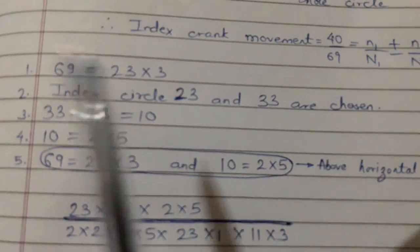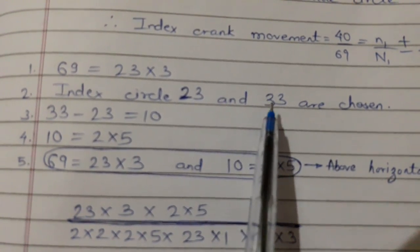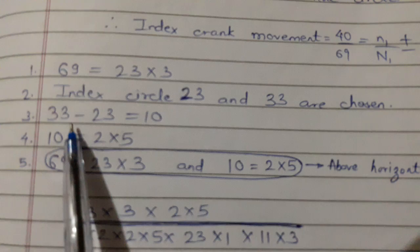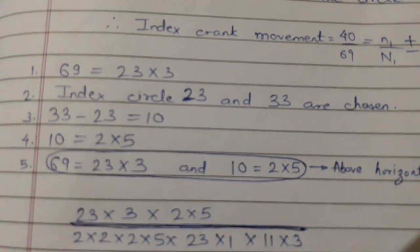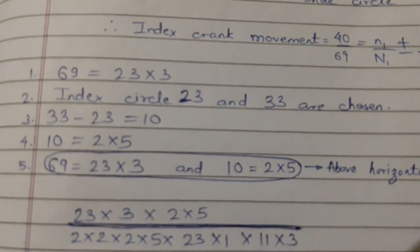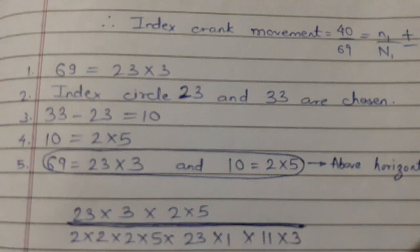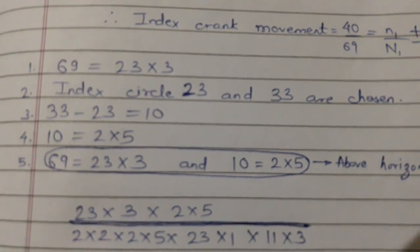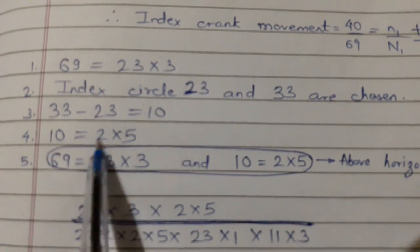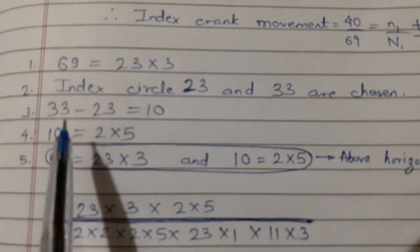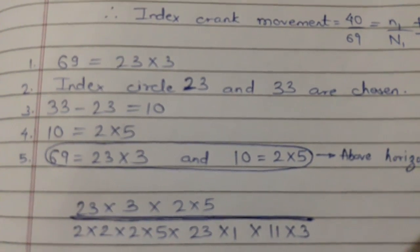Then next step, you have to subtract 33 minus 23. What you have to do is subtract the whole number of one circle from other. Then next step, the difference which you got, you have to factorize that. So we have factored now 2 into 5.